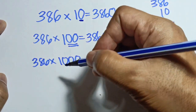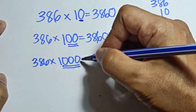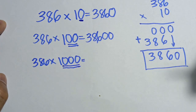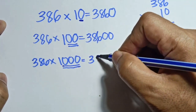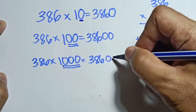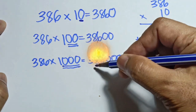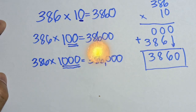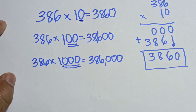Now if you multiply 386 times 1000, the same process applies. In 1000 there are three zeros. So the answer is 386,000. That is the quickest way to multiply numbers by 10, by 100, or by 1000.